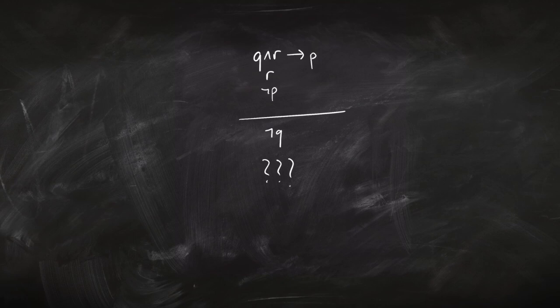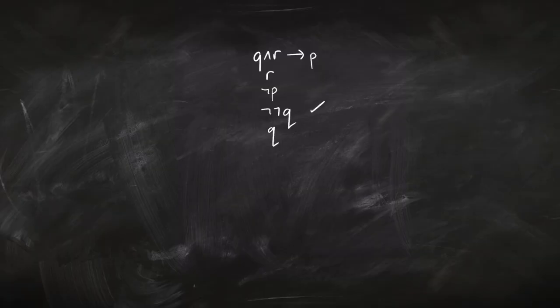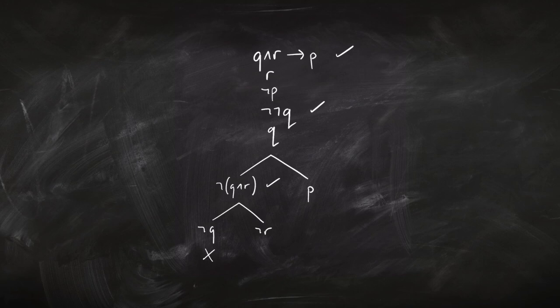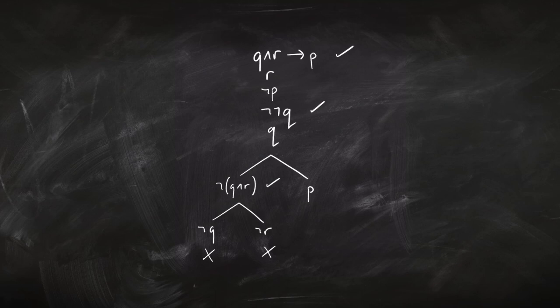We want to know if these premises entail this conclusion. We write down the premises, then write down the negation of the conclusion. We've got a double negation there — not-not-Q — so that becomes Q, and we add Q to the branch. Now we deal with this implication using the branching rule: on the left we have not-Q and R, on the right we have P. Then not-(Q and R) branches: on the left we have not-Q, on the right we have not-R. Checking those branches: the left branch has Q and not-Q, so it closes. The next branch has not-R and R, so it closes. The rightmost branch has P and not-P, so it closes too. It's a closed tree, which tells us that the premises really do entail that conclusion.